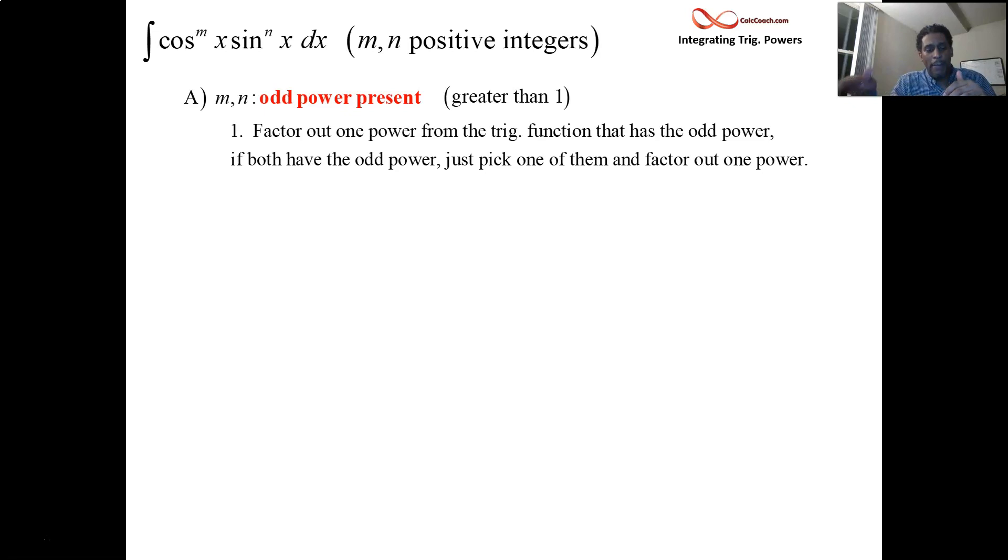Upon doing that, what happens then is you'll have these even powers remaining. Say your power's three and you take off one, you're left with two. If your power's five, you take off one, you're left with four.